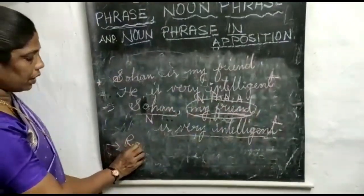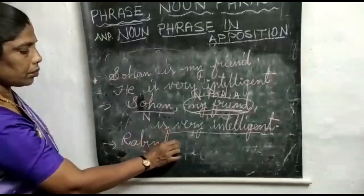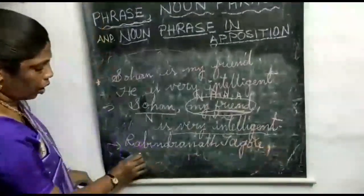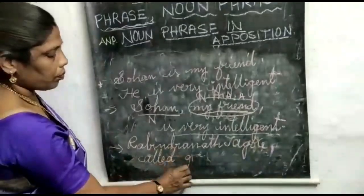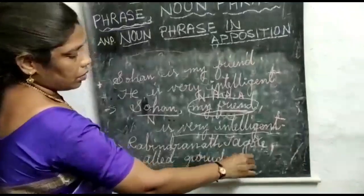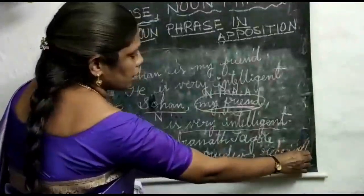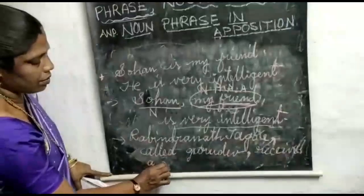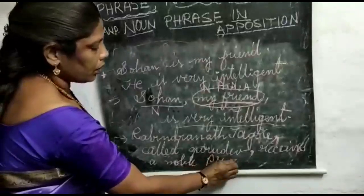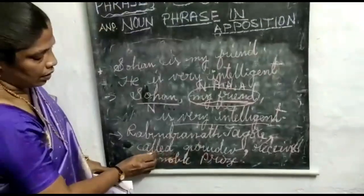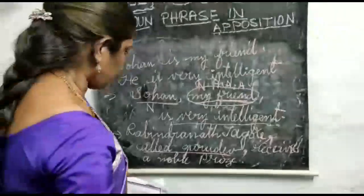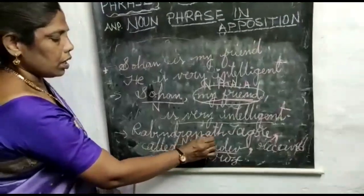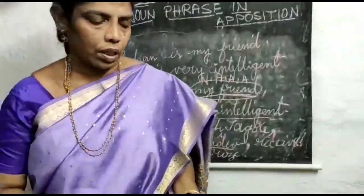One more example: Rabindranath Tagore, called Gurudev, received a Nobel Prize for his literature. Here, 'called Gurudev' is the noun phrase in apposition, as it refers to Rabindranath Tagore. You have to use commas: Rabindranath Tagore, comma, called Gurudev, comma, received a Nobel Prize for his literature. 'Called Gurudev' is the noun phrase in apposition.